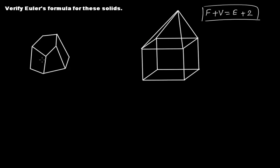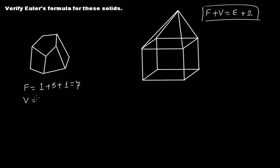Now, taking this figure, we need to calculate the number of faces. There is one face at the top. The top face has five sides, so from each side you have one lateral face — that gives five lateral faces — and then one face at the bottom. So you have a total of seven faces.